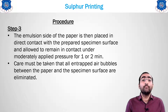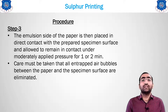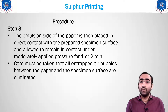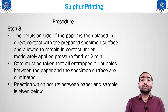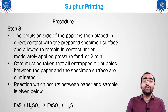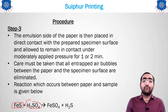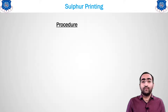Ensure there are no bubbles between the bromide paper and the specimen — similar to applying a screen protector on a phone. If bubbles exist, they can be removed using rollers so that the bromide paper is in full contact with the steel specimen. The reaction that occurs is: FeS present in the steel specimen reacts with H2SO4 from the bromide paper to form FeSO4 and H2S gas.